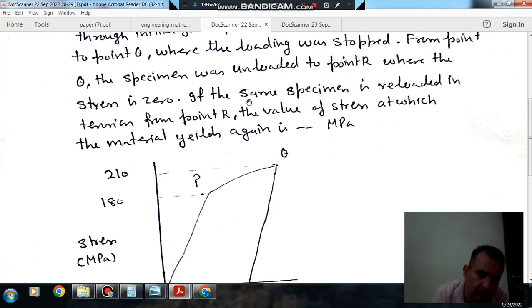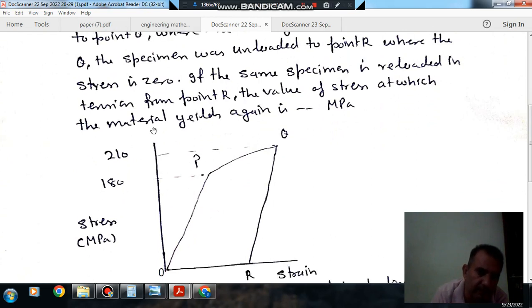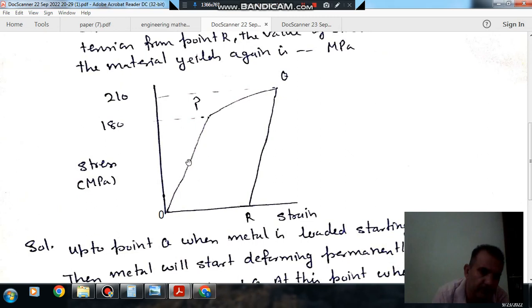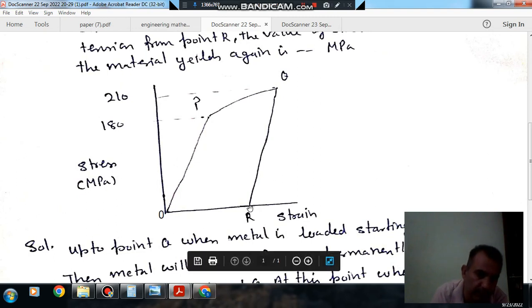If the same specimen is reloaded in tension from point R, the value of stress at which the metal yields again is dashed at Q. So this is the starting point, initially yield point is P, and after this strain hardens up to point Q, and then it is unloaded to zero stress at point R.